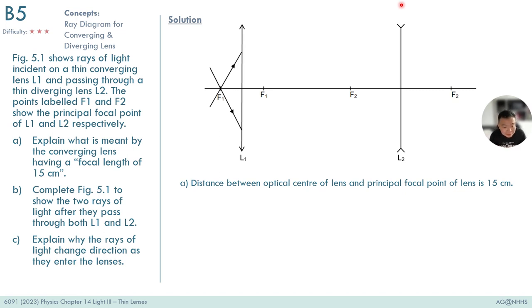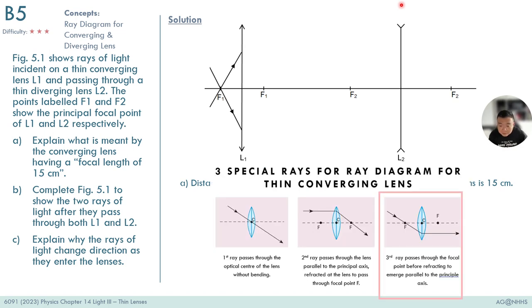Next, complete the ray diagram with the two light rays. Let's recall the light rays to be drawn. When the light ray passes through the focal point F1, it will refract and bend horizontally, which is parallel to the principal axis. I'll draw that in here.